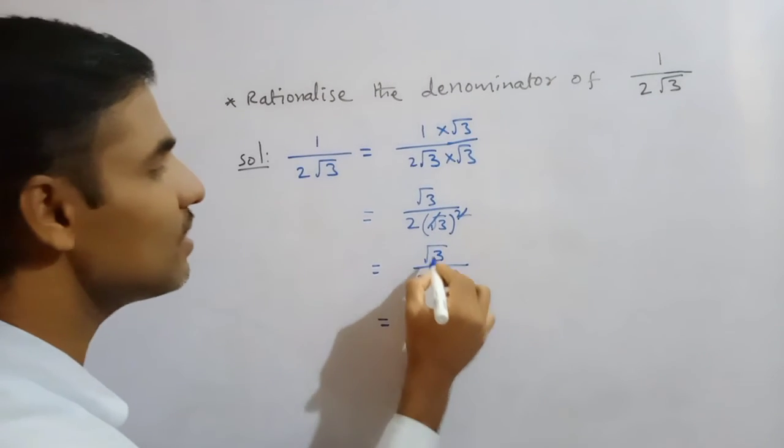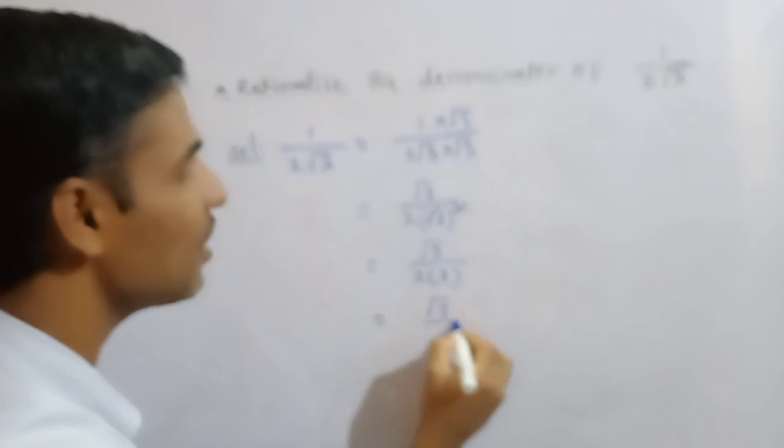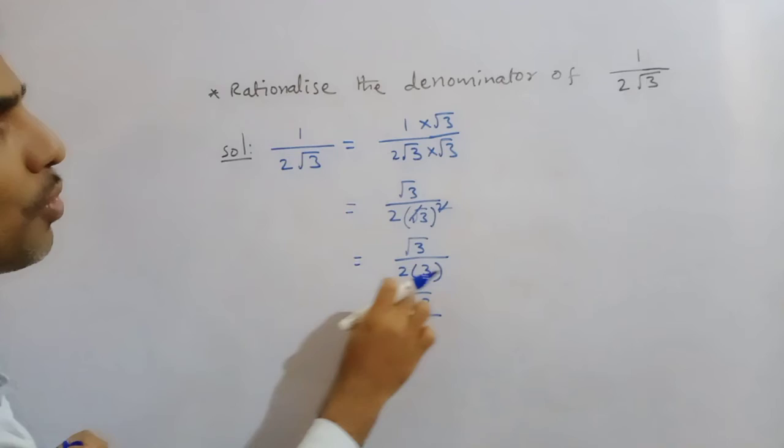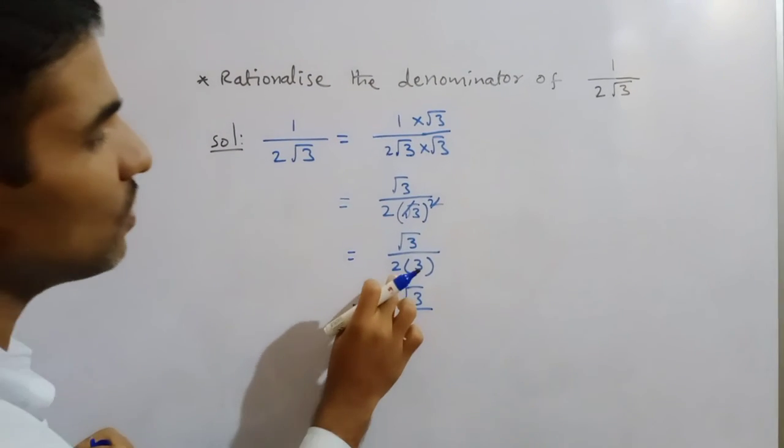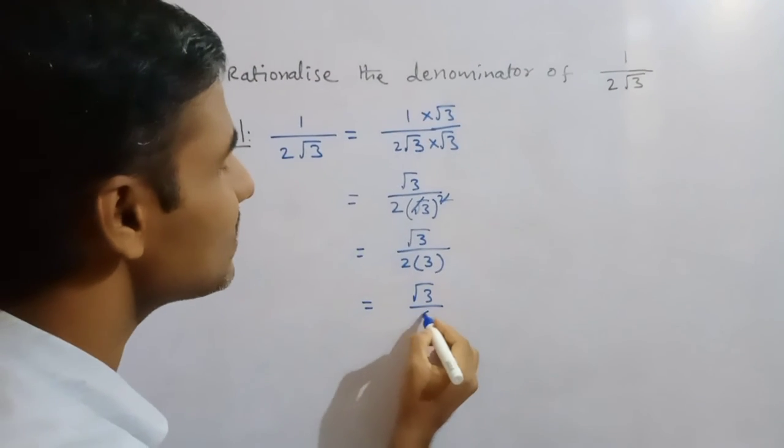Then this root 3 aside you write it. Now we can multiply here. This both are rational numbers, rational numbers we can multiply. So 2, 3 is the 6.